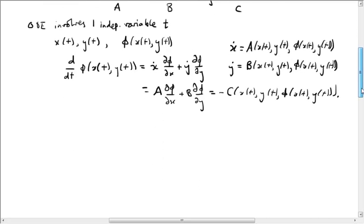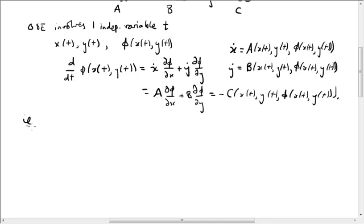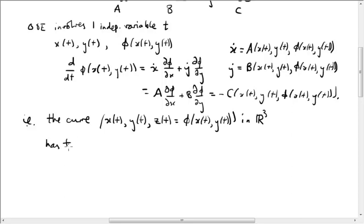In other words, if we consider the curve in three-dimensional space, x of T, y of T, and then z of T, which is equal to phi evaluated at the point x of T, y of T. So this is a curve in three-dimensional space, R3. If we consider this curve, its tangent vector is just x dot, y dot, z dot, and z is equal to phi, right?